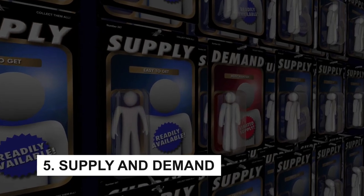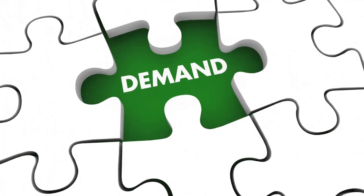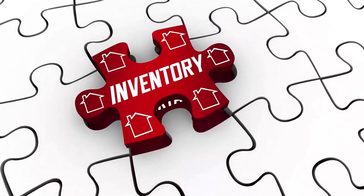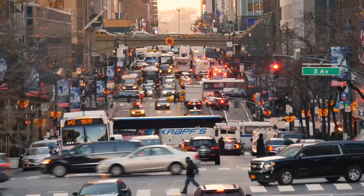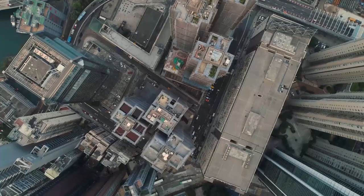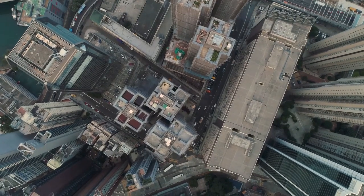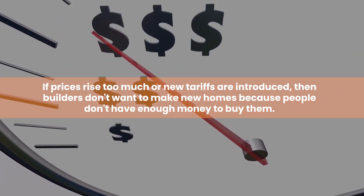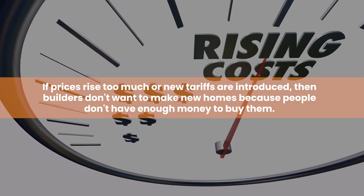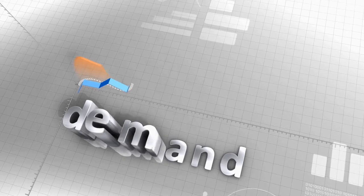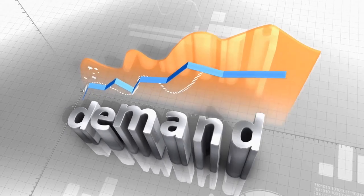Number 5: Supply and Demand. Supply and demand has a significant impact on the real estate market. In terms of inventory, certain cities have a shortage of space and thus there is high demand for housing, while in some other regions it's because there isn't enough supply. If prices rise too much or new tariffs are introduced, builders don't want to make new homes because people don't have enough money to buy them. If demand falls, builders stop building and market supply falls.